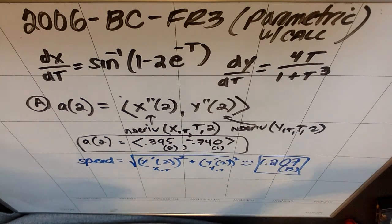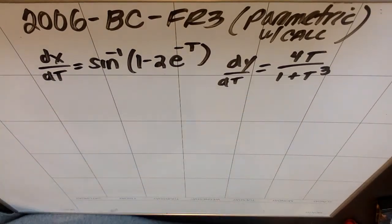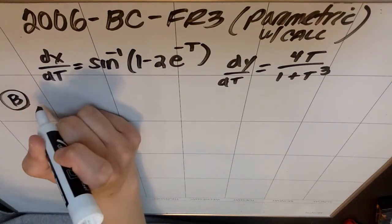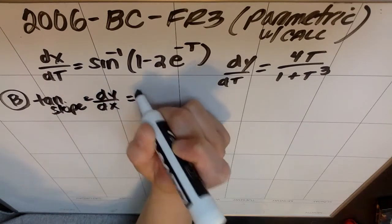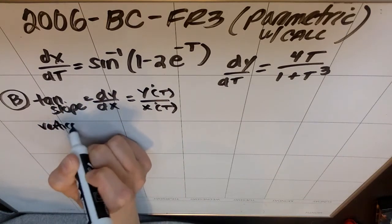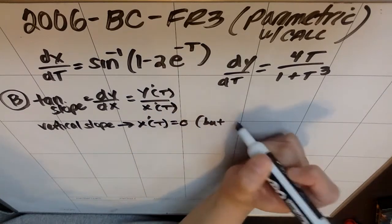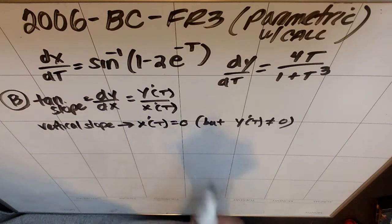Now let's go on to prompt B. The curve has a vertical tangent line at one point. At what time t is the object at this point? We need to know what vertical tangent means. The tangent slope is dy/dx, but in parametric that means y prime of t over x prime of t. And what it means to have a vertical slope, the vertical slope would mean that the denominator x prime of t equals 0, but the numerator y prime of t does not equal 0, because 0 over 0 is an indeterminate form.